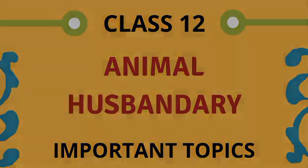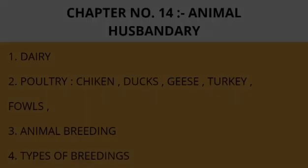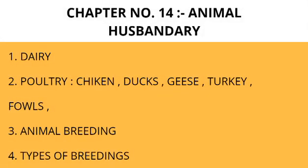So first topic is dairy — dairy and dairy culture. Then poultry: poultry includes chicken, ducks, geese, turkey and pheasants.